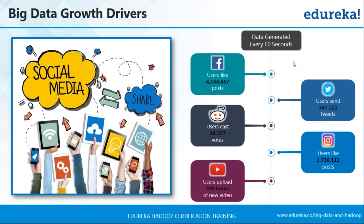One prominent factor behind the rise of big data is social media. We have billions of people on social media. We are social animals, and we love to interact and share our thoughts and feelings, and social media provides just the platform we need. If you look at the stats, on Facebook, users generate almost 4 million likes every 60 seconds. On Twitter, there are almost 300,000 tweets every 60 seconds. On Reddit, there are 18,000 user cast votes. On Instagram, there are more than 1 million likes. And on YouTube, there are almost 300 hours of new video uploaded every 60 seconds. This is data for every 60 seconds — imagine how much we have accumulated throughout the years.